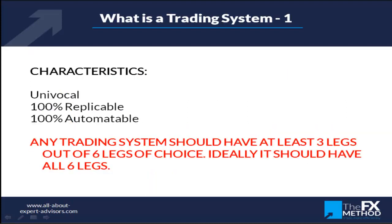What makes a trading system distinct from just trading or technical analysis is that it's univocal — one unique definition that everybody understands the same way. It's 100% replicable, meaning that any two traders in the room would trade exactly the same rules. And hence it's 100% automatable. When you have a real trading system, you can convert it into a robot. If you cannot 100% convert it into a robot, it's a trading strategy — not the same as a trading system.